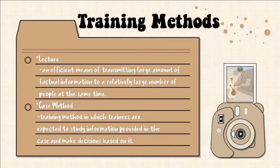Second is the case method — a training method in which trainees are expected to study information provided in the case and make decisions based on it. Like what we have done before, it applies and represents past experiences from which lessons can be drawn to reflect on improving performance and understanding. The case could be from the company's own experience, the owner's, or from outside. Basically, a historical event or experience is studied and presented to trainees, who then analyze what happened.